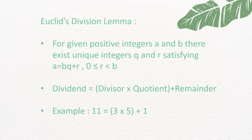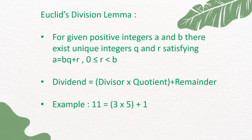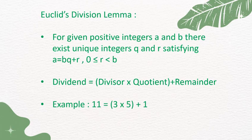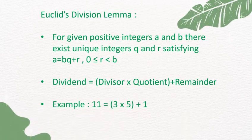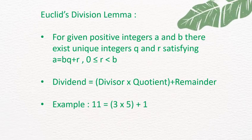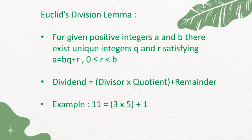The next important topic is Euclid's Division Lemma. For given positive integers a and b, there exist unique integers q and r satisfying a = bq + r, where 0 ≤ r < b.